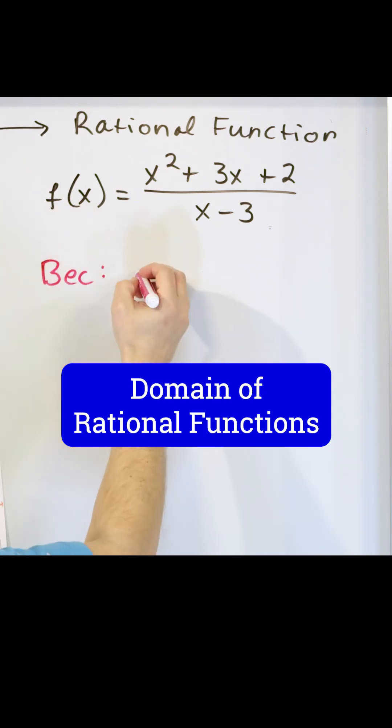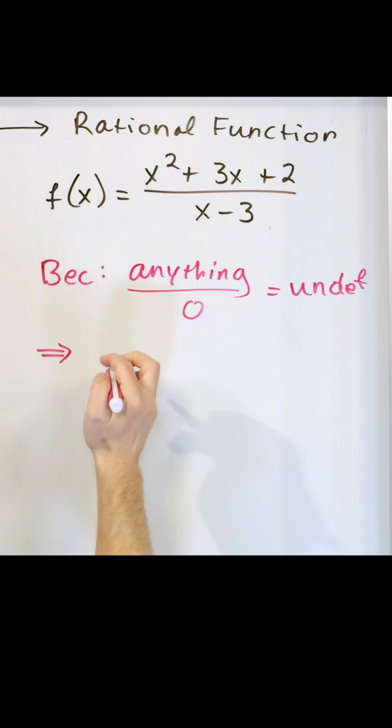When I say because anything over zero is undefined, what that means is that because of that, what I take is the denominator. I set the denominator equal to zero.